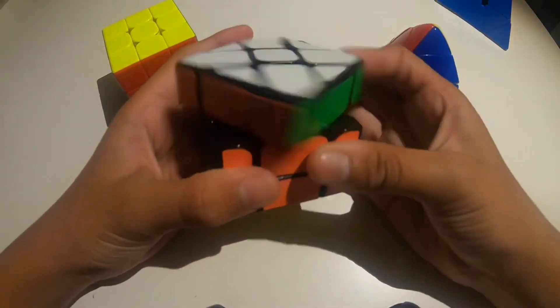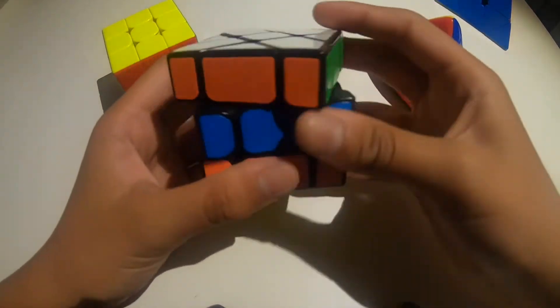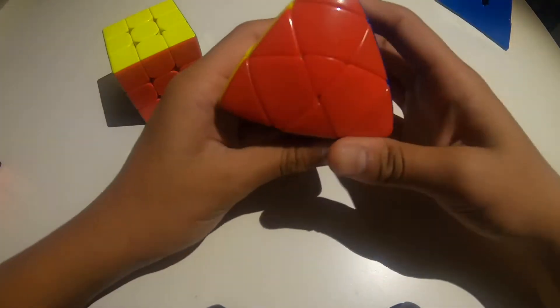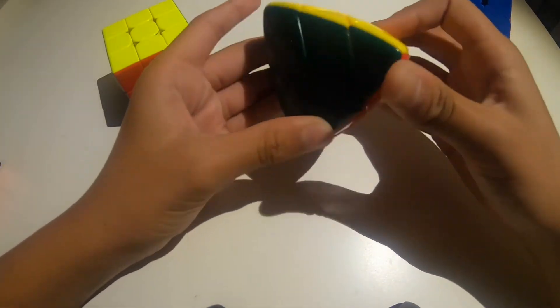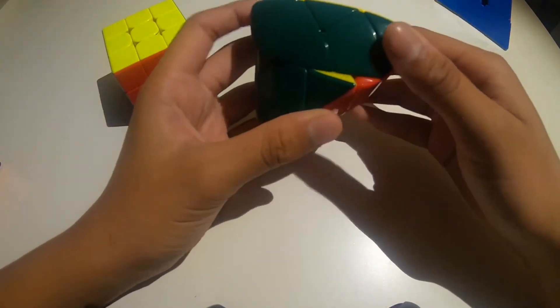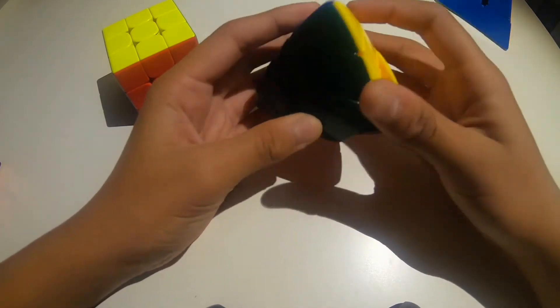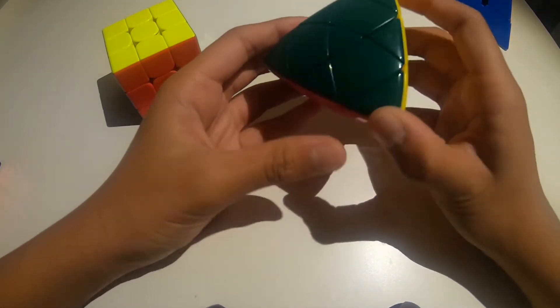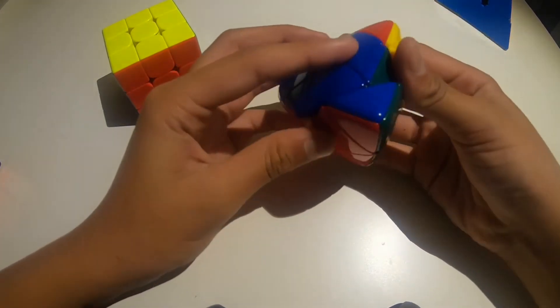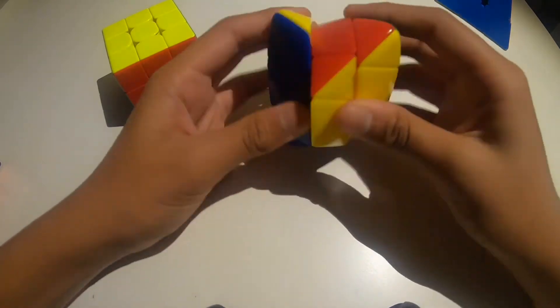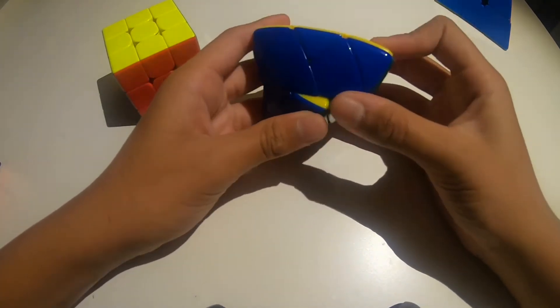Because it's got a top layer, bottom layer, and the middle layer. And it makes a lot of sense. While this one is like, it doesn't really have a top and bottom. Because it's not a cube, it's a pyramid shape. So it is pretty hard, but once you get the hang of it, you can solve it.